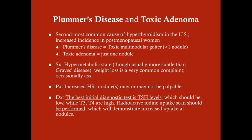The second most common cause of hyperthyroidism in the U.S. is Plummer's disease, also known as toxic multinodular goiter, where more than one nodule secretes thyroid hormone. You can also have a toxic adenoma, where just one nodule is secreting hormone. Adenoma, by definition, is a tumor that is secreting something. So toxic multinodular goiter has more than one toxic adenoma; toxic adenoma is just one nodule.